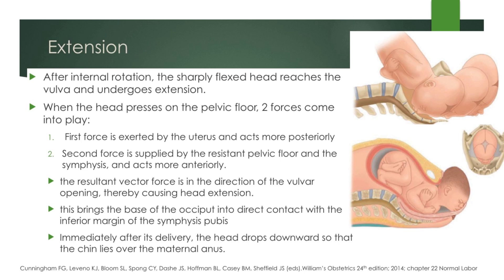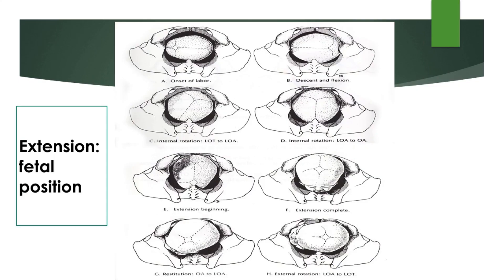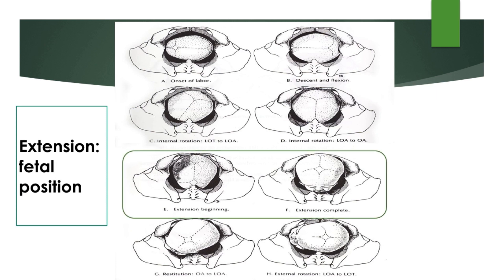The next cardinal movement of labor is extension. After internal rotation, the sharply flexed head reaches the vulva and undergoes extension. When the head presses on the pelvic floor, two forces come into play: the first is exerted by the uterus and acts more posteriorly, and the second is supplied by the resistant pelvic floor and symphysis and acts more anteriorly. The resultant vector force is in the direction of the vulvar opening, causing head extension. This brings the base of the occiput into direct contact with the inferior margin of the symphysis pubis. Immediately after its delivery, the head drops downward so that the chin lies over the maternal anus. The fetal position remains occiput anterior, but the anterior fontanel is now more palpable.